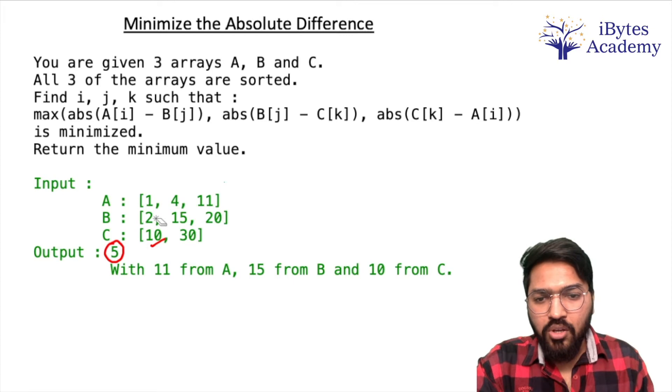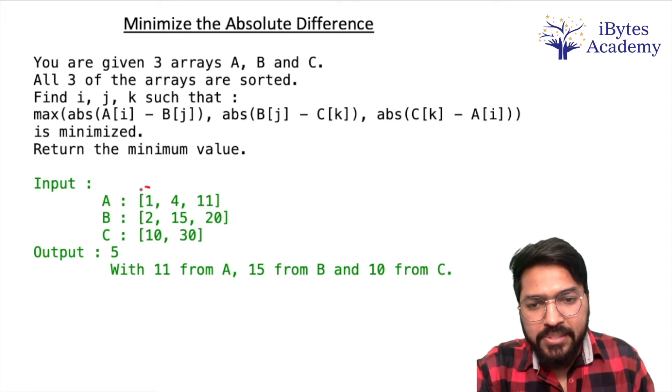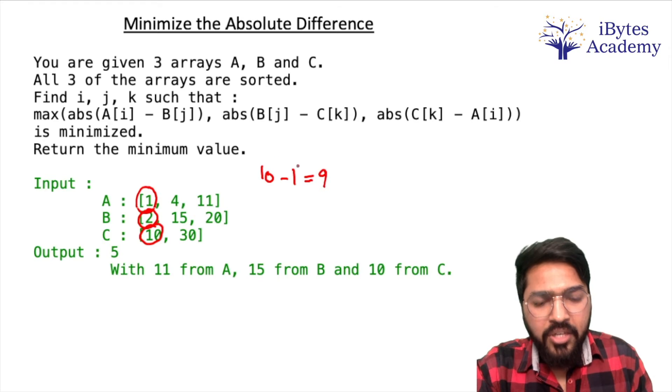Let's go. Now let's discuss it. The solution is quite simple. The first thing: we take the three arrays, take the first element. And we will take the maximum minus minimum, that is 10 minus 1 equals 9. Initially we will take an output variable.